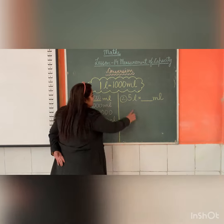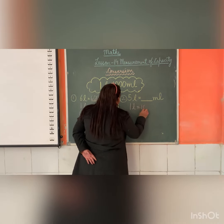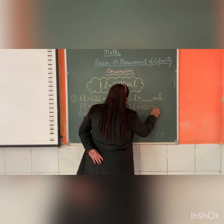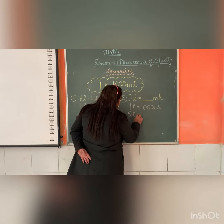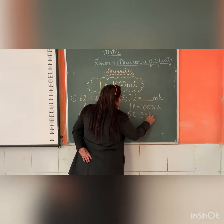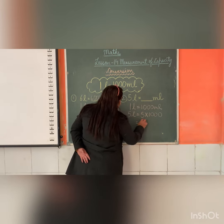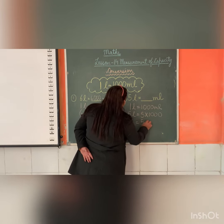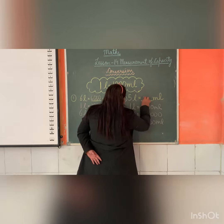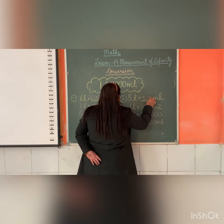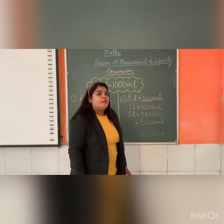Similarly, we know 1 litre is equal to 1000 milliliter, so 5 litres is equal to 5 multiplied by 1000, and we get the answer: 5000 milliliter.